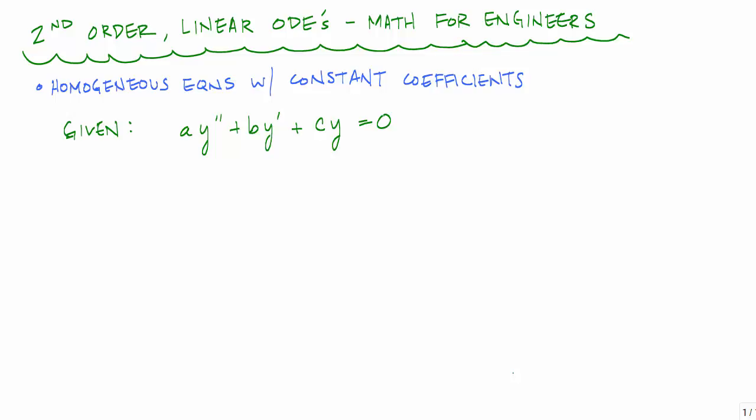Typically, what happens is that you're given some generic equation with the variables. And let's say this one is in terms of y. And what we want to know is the solution for this function y. We want to find y as a function of whatever it is. In some cases, it's time. It could be y as a function of x. It's just a solution.